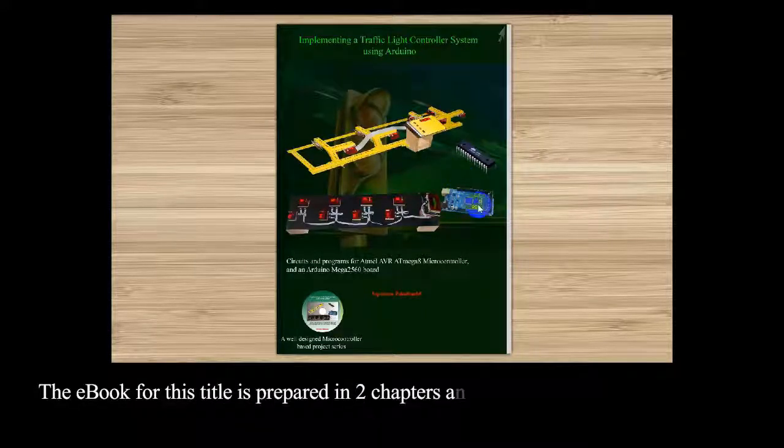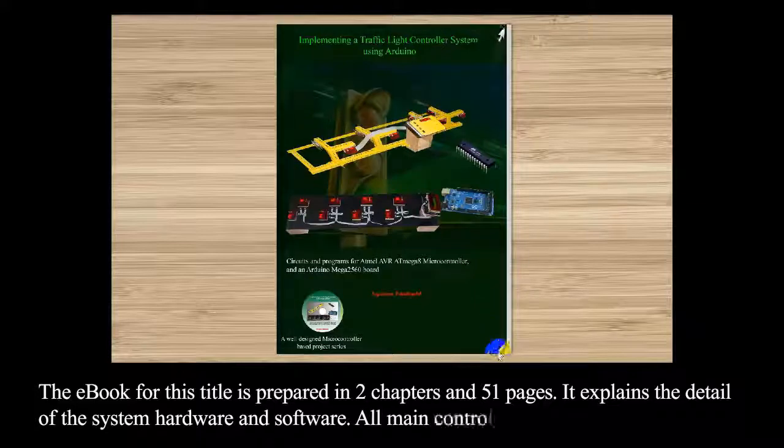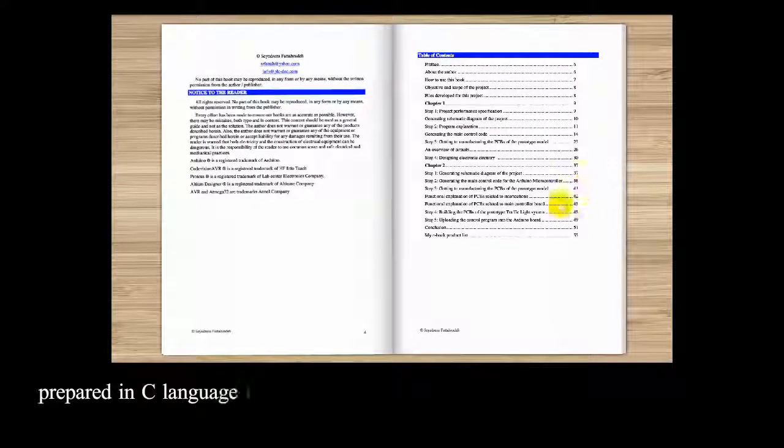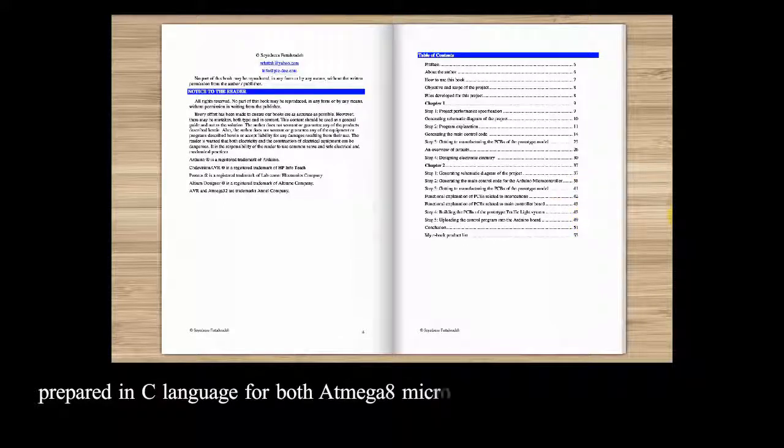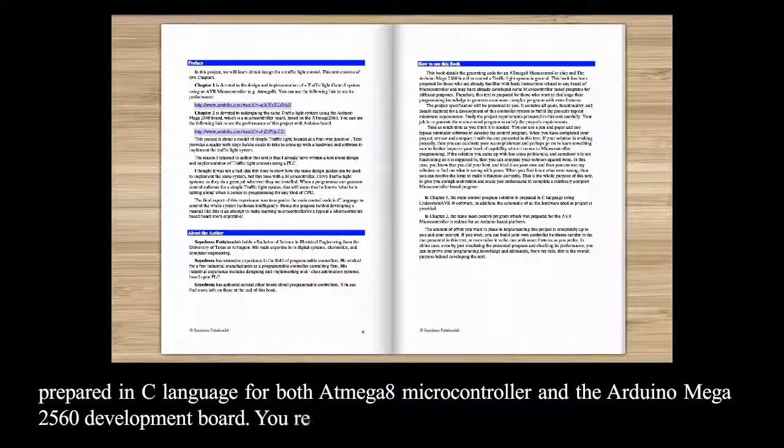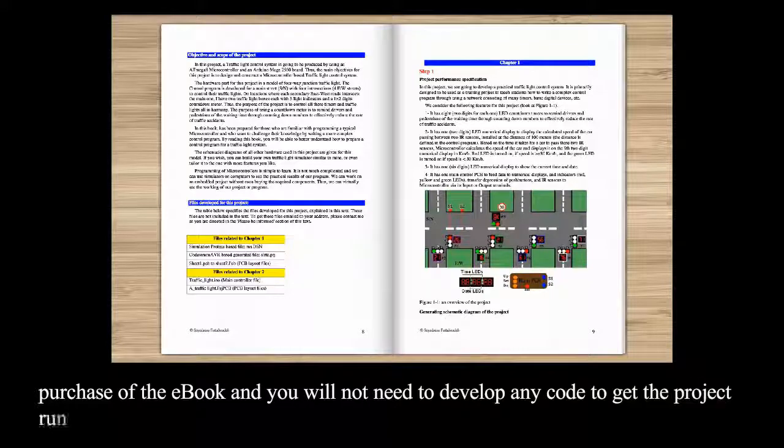The ebook for this title is prepared in two chapters and 51 pages. It explains the detail of the system hardware and software. All main control program solutions are prepared in C language for both ATmega8 microcontroller and the Arduino Mega 2560 development board. You receive all these software solutions upon the purchase of the ebook, and you will not need to develop any code to get the project running.